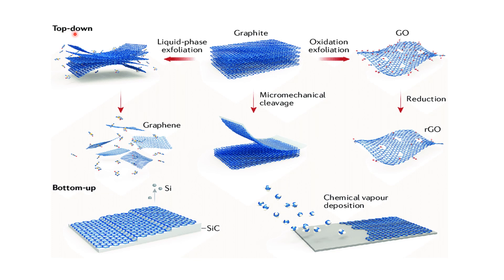This summarizes the top-down and bottom-up approaches for graphene preparation. In the top-down approach, graphite is the starting material and is converted to few-layer or monolayer graphene. Micro-mechanical cleavage converts graphite to few layers of graphene; liquid phase exfoliation converts graphite to monolayer graphene; oxidation exfoliation converts graphite to graphene oxide, which is further reduced to reduced graphene oxide with properties similar to graphene. In the bottom-up approach, two methods are used: chemical vapor deposition and epitaxial deposition on a silicon carbide substrate.